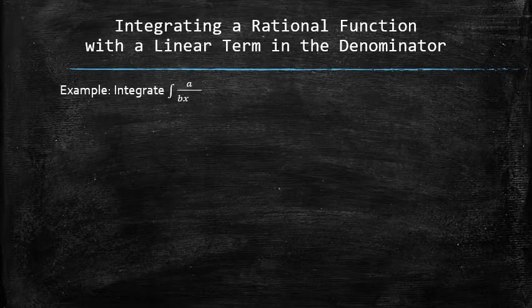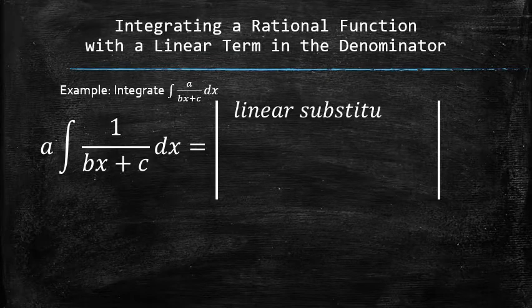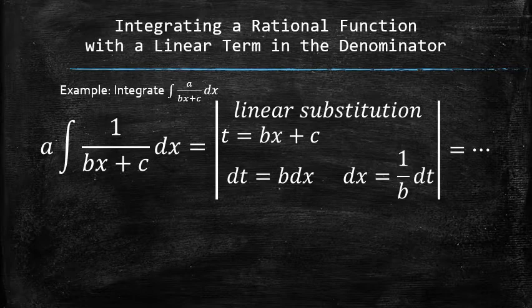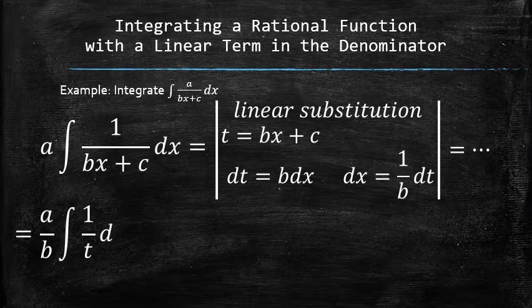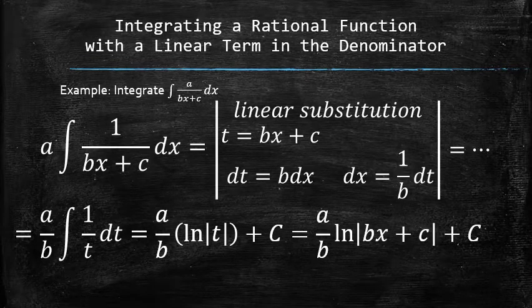Let's start with the simplest non-trivial rational function. We factor out the constant a right away and set up the linear substitution by setting t equal to bx plus c, finding the differential of t, and expressing dx in terms of dt. As a result, we have a simple indefinite integral in terms of t. We continue the integration process by finding the antiderivative and replacing t with the original function.